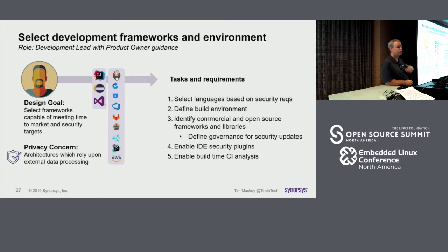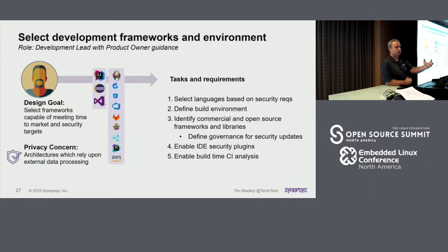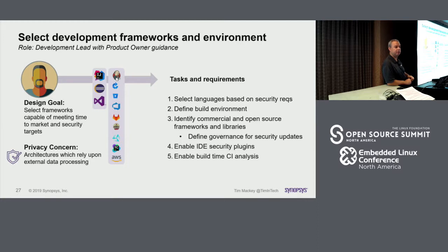Similarly, development frameworks have a role here because distributed processing means some level of data transfer. How are you securing the data in flight? How are you securing it at the other end? If you've gone to a cloud-based service, how much of the infrastructure ownership you're transferring to that service is something you need to worry about from a regulatory perspective? For example, if you're processing credit card information, is the underlying infrastructure capable of handling that under PCI guidelines?